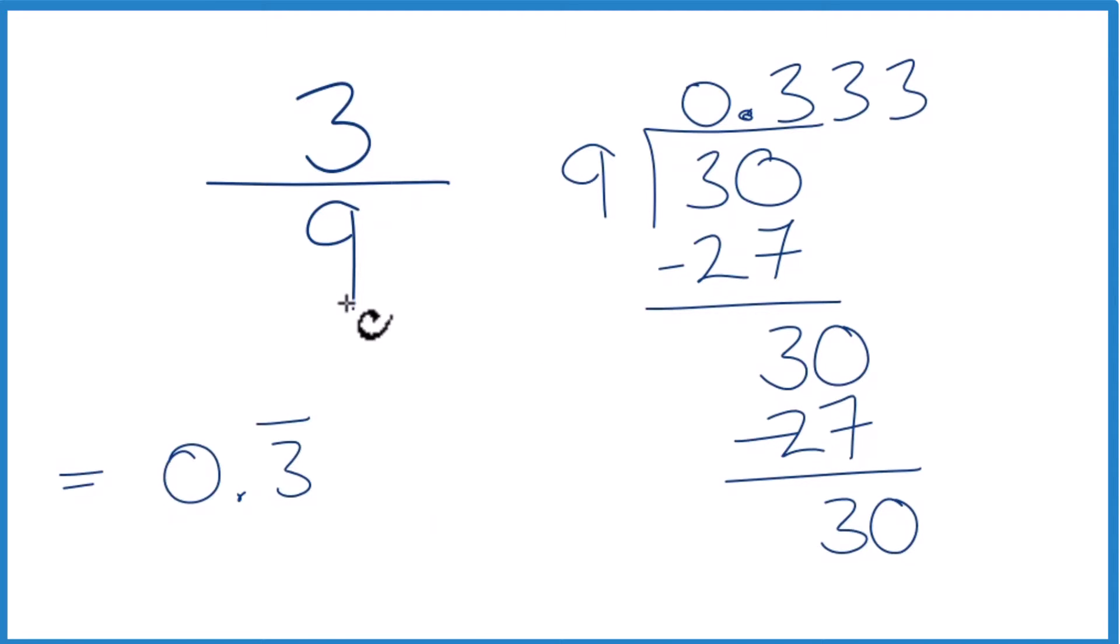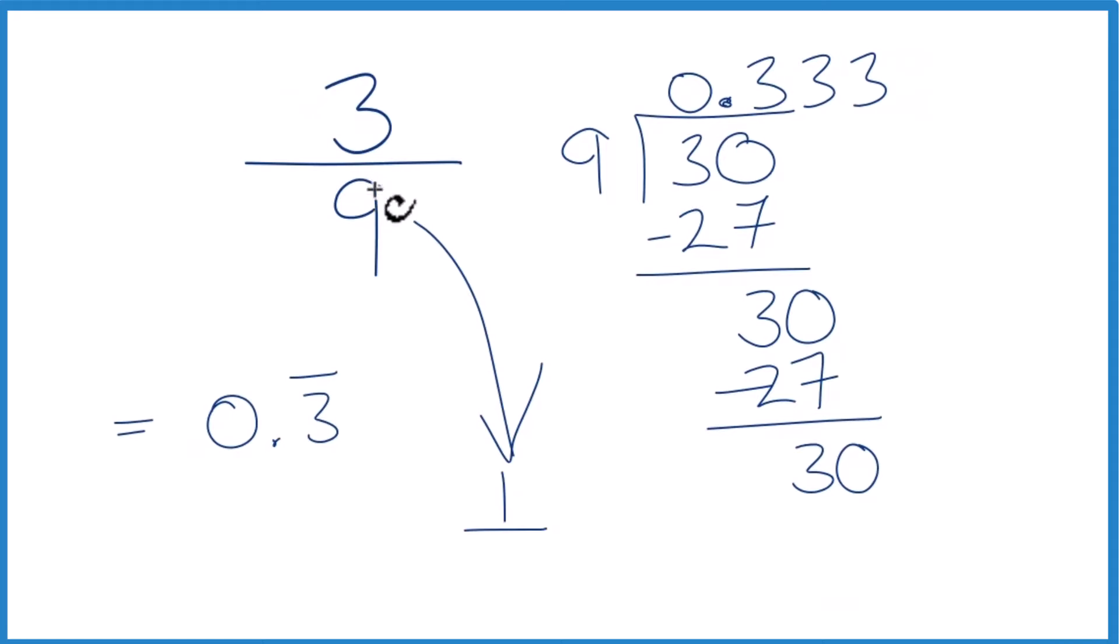Do note that we could simplify 3 ninths down to 1 third, because 3 goes into itself once and it goes into 9 three times. And then you could divide 1 by 3, but you'd end up with the same answer, 0.3333 repeating, or you could write it as 0.3 with a bar over it. This is Dr. B. Thanks for watchin'.